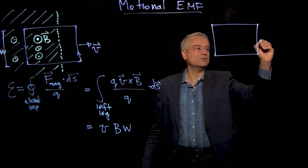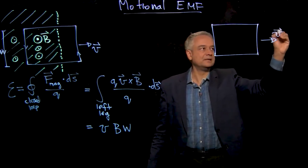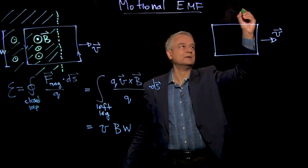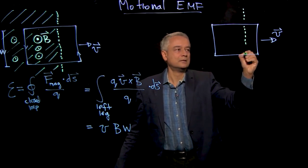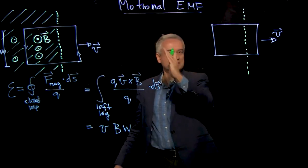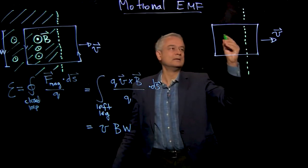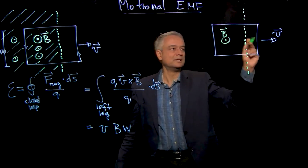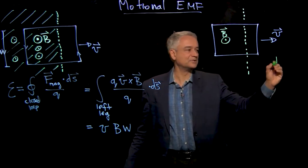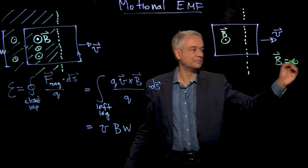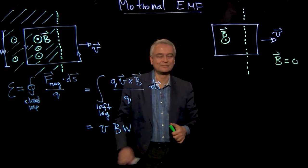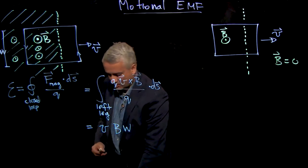It's moving in this direction with velocity V and there's a magnetic field on this side of the dashed line. Here there's a magnetic field, here there's no magnetic field. So out here B is zero, but in here there's a nonzero magnetic field. And I want now to think about what happens to the flux through this loop as it's moving.